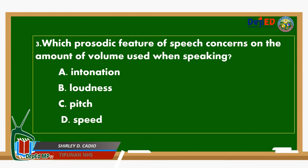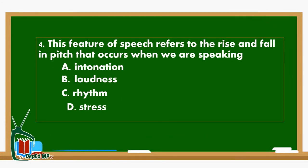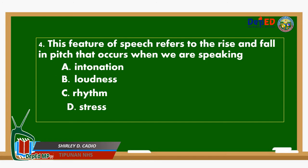Number 3. Which prosodic feature of speech concerns the amount of volume used when speaking? A. Intonation. B. Loudness. C. Pitch. D. Speed. Number 4. This feature of speech refers to the rise and fall in pitch that occurs when we are speaking. A. Intonation. B. Loudness. C. Rhythm. D. Stress.